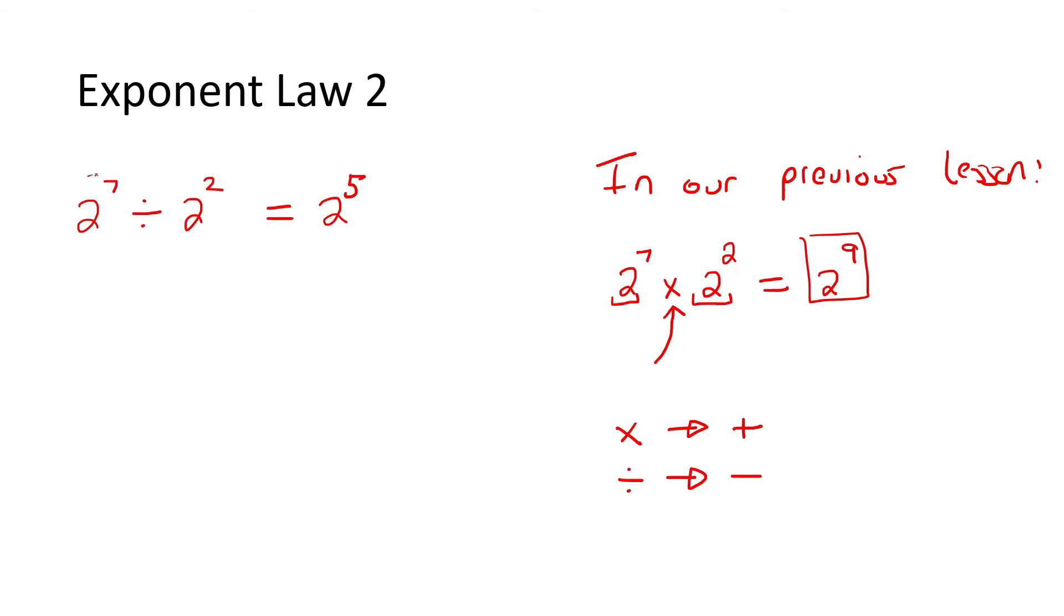So we know that 2^7 is actually 2×2×2×2×2×2×2, seven times, right? One, two, three, four, five, six, seven. Now what does divide mean? Well, divide means over. And then what is 2^2? It's 2×2. What you could now do is cancel one of these and one of these, and then one of these and one of these. So everything is now cancelled. So how many twos do we still have left at the top here? One, two, three, four, five.